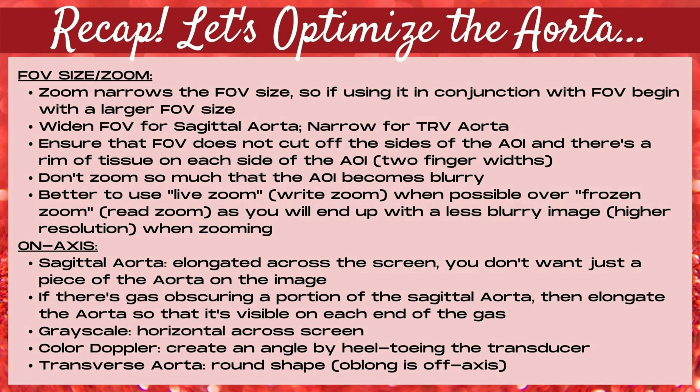It's crucial that your aorta is on axis. Your sagittal aorta should be elongated across the screen — not just a small piece or off axis. If gas is obscuring a portion of the sagittal aorta, elongate it so it's visible on each end of the gas. For grayscale, you want the aorta horizontal across the screen. For color Doppler, create an angle by heel-toeing the transducer. For the transverse aorta, you want a round shape — oblong means off axis. Note that the common iliac arteries in transverse will most commonly be slightly oblong in shape.